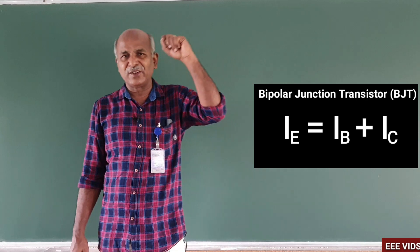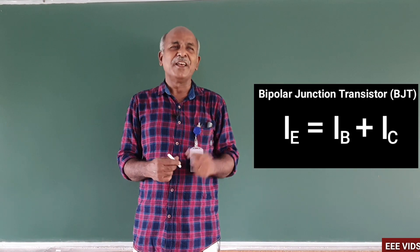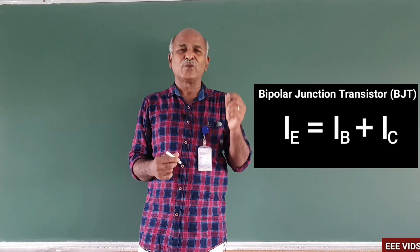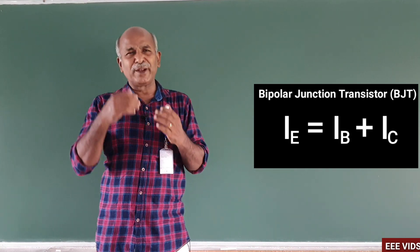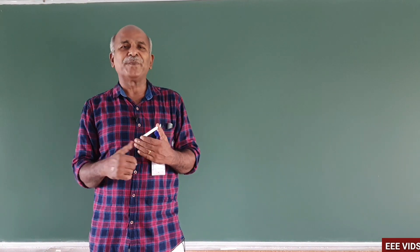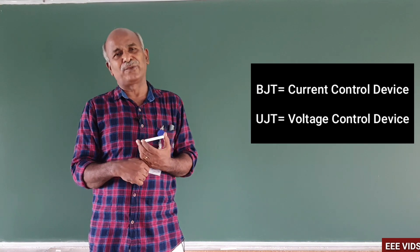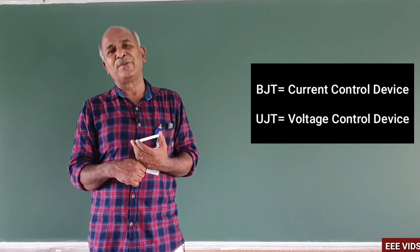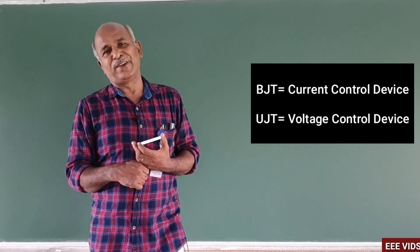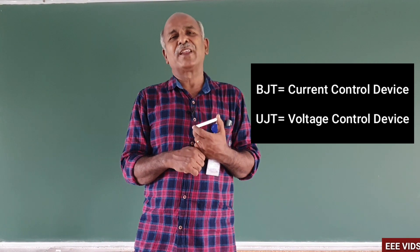In the case of BJT — the bipolar junction transistor — we have emitter current, base current, and collector current. IE equals IB plus IC. The output current is controlled by the input current, so BJT is called a current-controlled device. FET is the voltage-controlled device, while BJT is the current-controlled device.